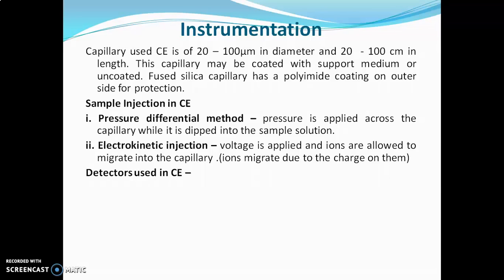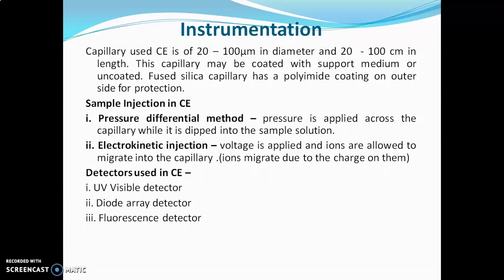Detectors used in capillary electrophoresis include: UV-visible detector, diode array detector, fluorescence detector, electrochemical detector, and mass spectrophotometer detector. Whatever the detector used, it is present near the end of capillary — not at the end — and so it is called an on-column detector.